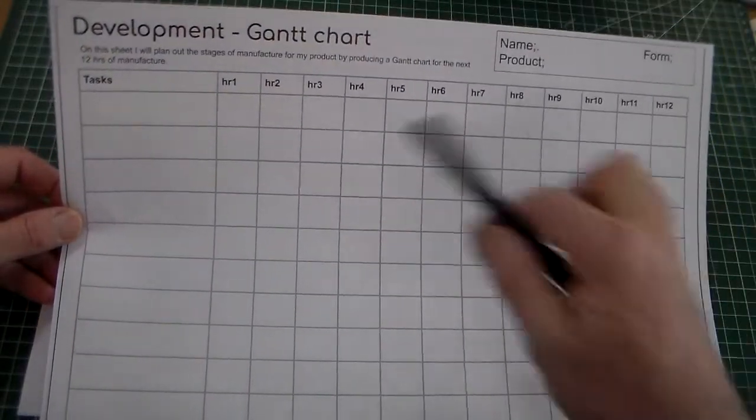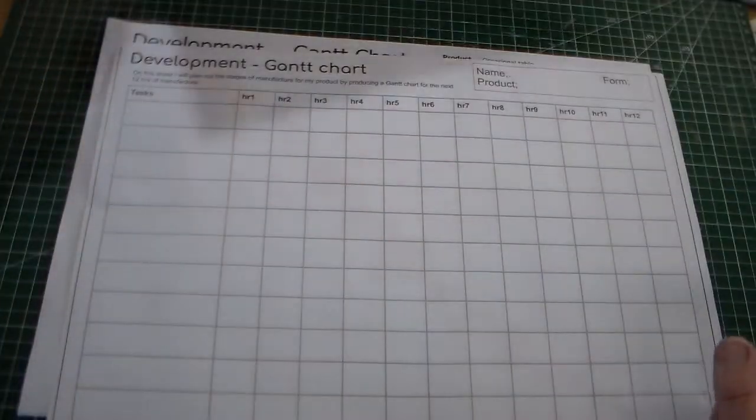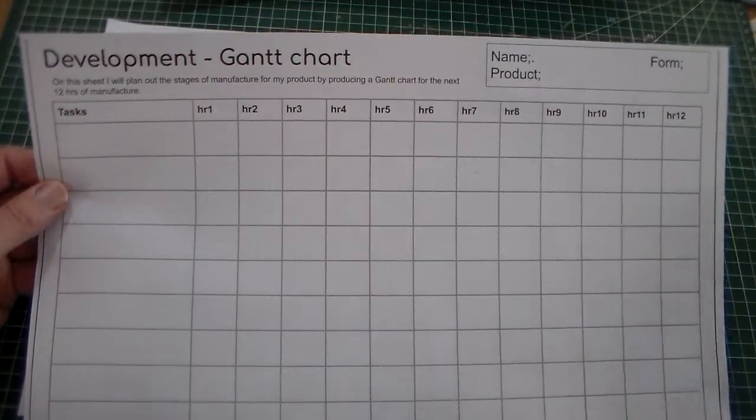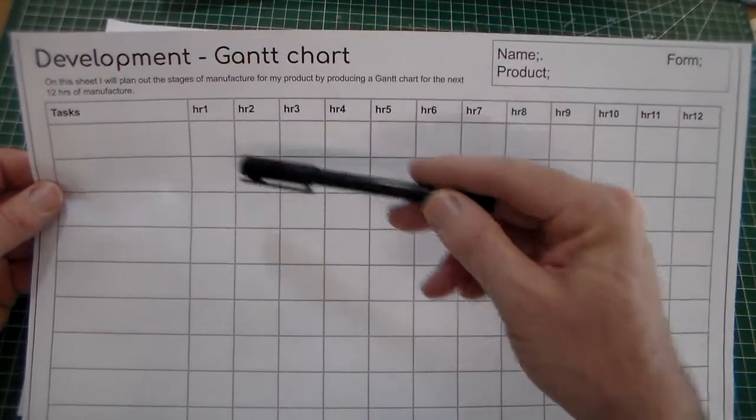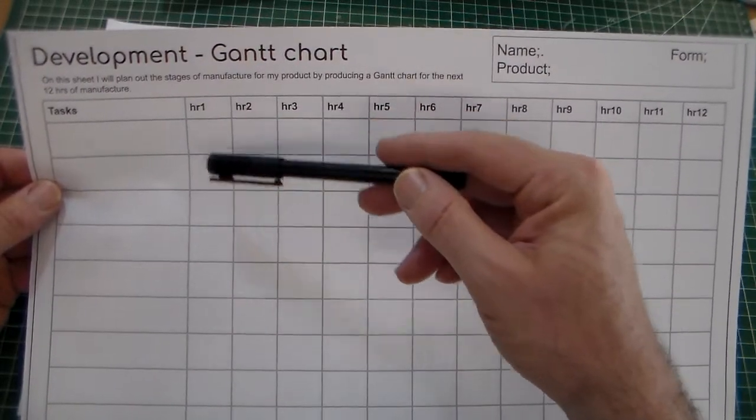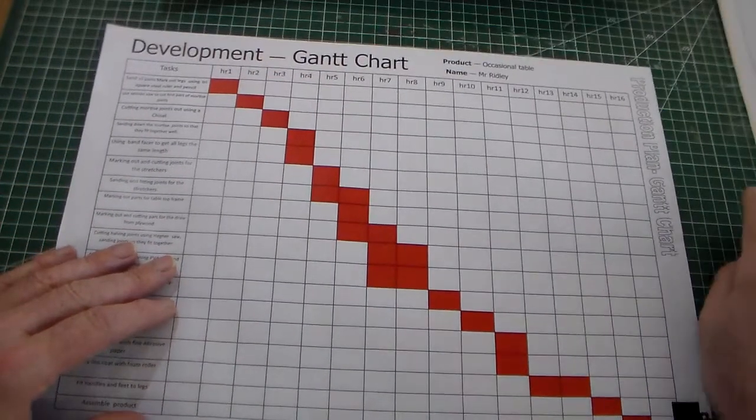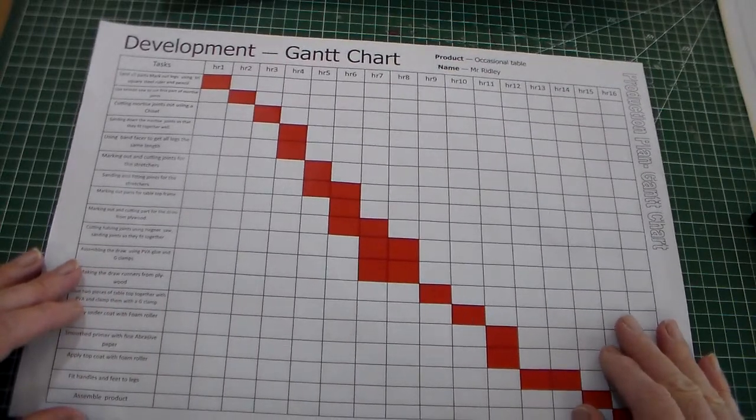You could write it in and fill in the things as you go along to plan, but it is probably better just to do it straight onto this electronic copy. Just fill in these and then block in. You pick one of these squares and just fill these with a color. So that is Gantt chart for GCSE NEA.